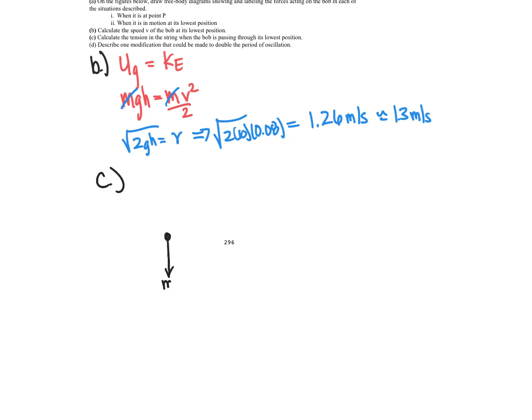So again, here's our bob. We have mass times gravity, and we have our tension pulling up. Now this object is moving in uniform circular motion.